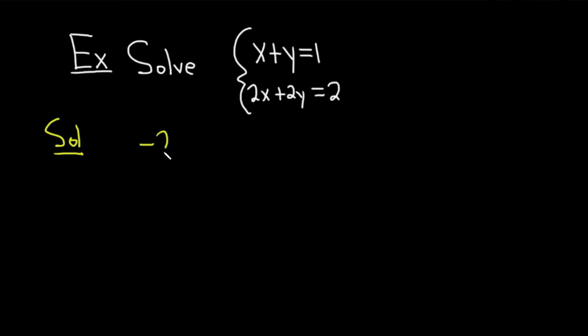If we do that, we get negative 2x. Then negative 2 times y is negative 2y. And then negative 2 times 1 is negative 2. And then right below it, we can write the other equation. So we have 2x plus 2y. And that's equal to 2.